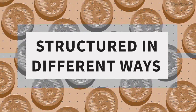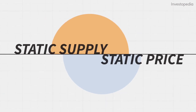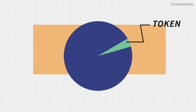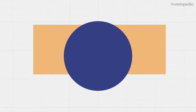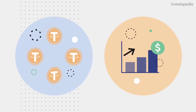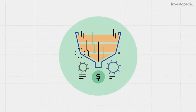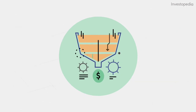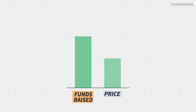ICOs can be structured in different ways. An ICO can have a static supply and a static price, meaning a company sets a specific funding limit — each token has a preset price and the total supply is fixed. An ICO can also have a static supply of tokens and a dynamic funding goal, so the funds received in the ICO will determine the token price. And some ICOs have a dynamic token supply but a static price, where the amount of funding determines the supply.